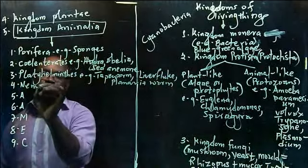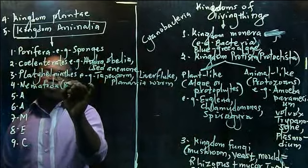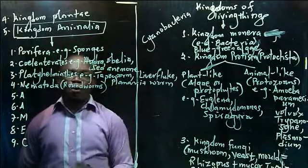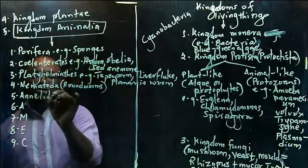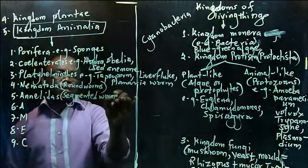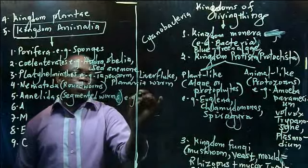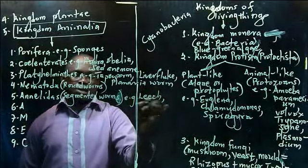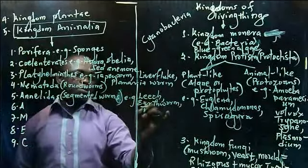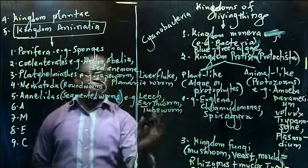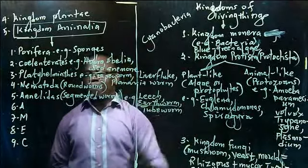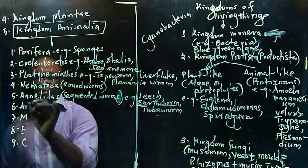We also have Nematoda, also known as roundworms. All your parasitic worms are here — guinea worm, hookworm, filarial worm. Then we have Annelida, also known as segmented worms. They possess body segments. This is where you have earthworm, leech, and tubeworm. The only free-living worm here is the earthworm; leech and tubeworm are parasitic in nature.